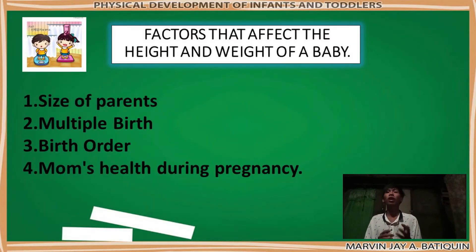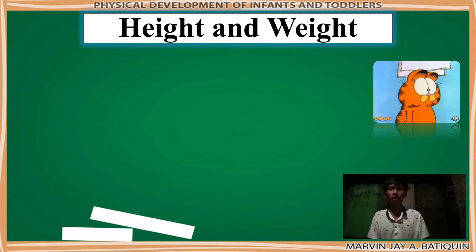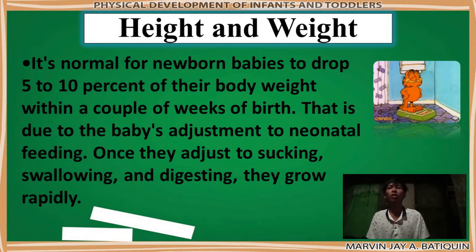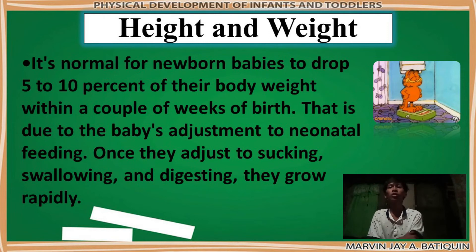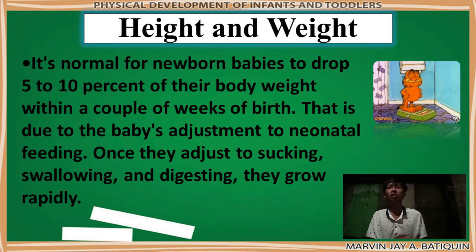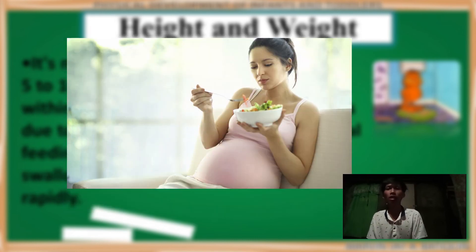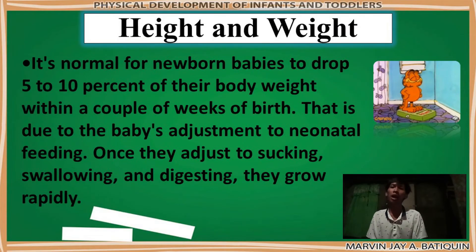Those are some factors that affect the height and weight of the baby. Based on the book, here are some statements about height and weight. First, it is normal for newborn babies to drop 5 to 10 percent of their body weight within a couple of weeks of birth. That is due to the baby's adjustment to the new natal feeding. Once they are sucking, swallowing, and adjusting, they grow rapidly. The baby is not accustomed to the current environment because they were in the womb for nine months, and the way of providing food is very different. That's why they drop their weight up to 5 to 10 percent.